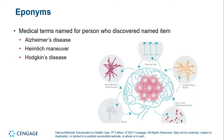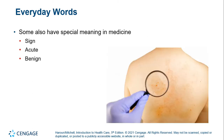Eponyms are medical terms named for people who discovered or named that item — for example, Alzheimer's disease, the Heimlich maneuver, and Hodgkin's disease. There are also everyday words that have a special meaning in medicine, such as 'sign,' 'acute,' and 'benign.'